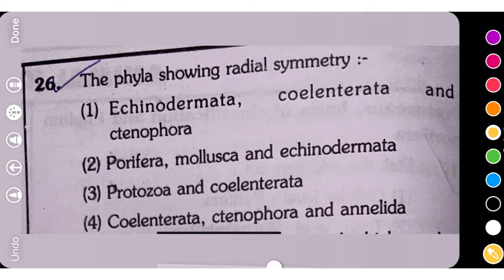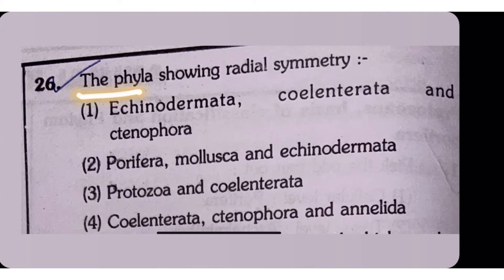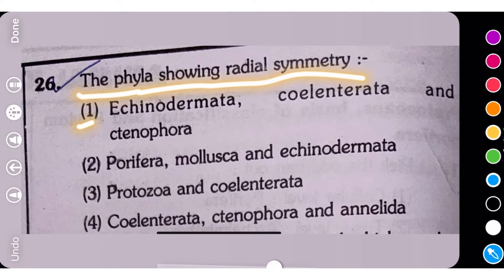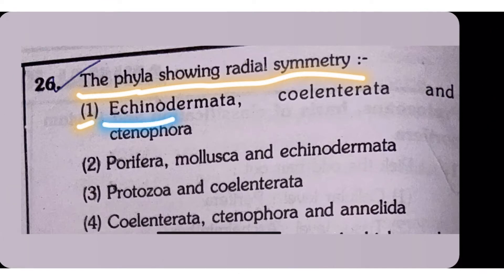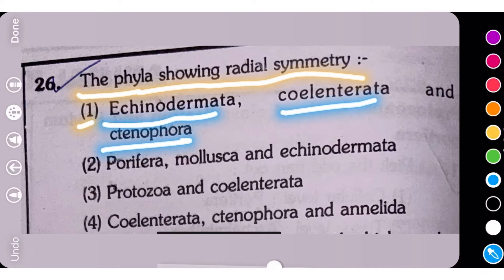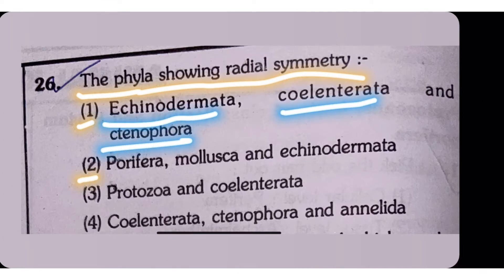Question No. 26: The phyla showing radial symmetry. Option 1: Echinodermata, Cylentrata, and Tynophora.